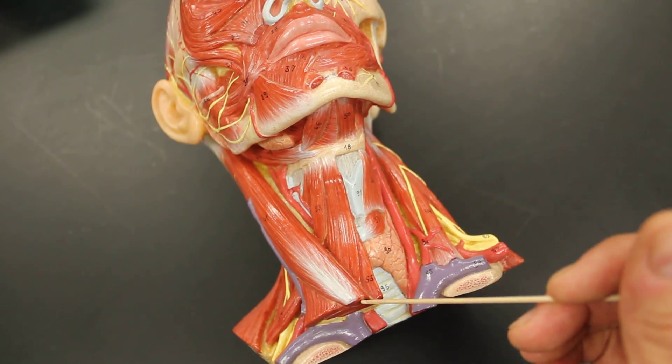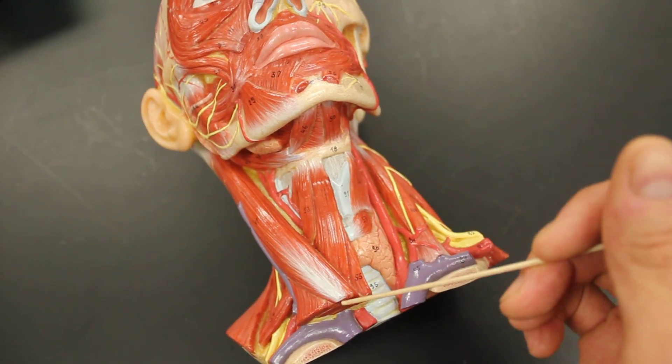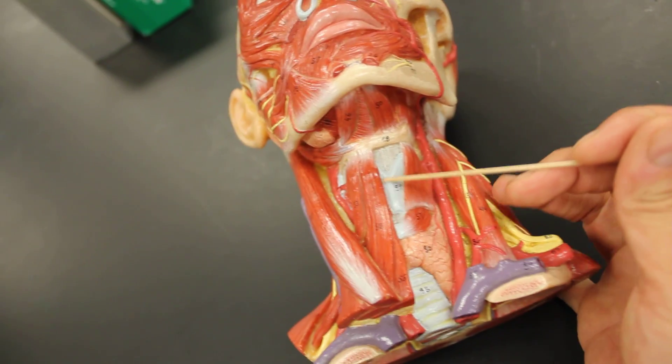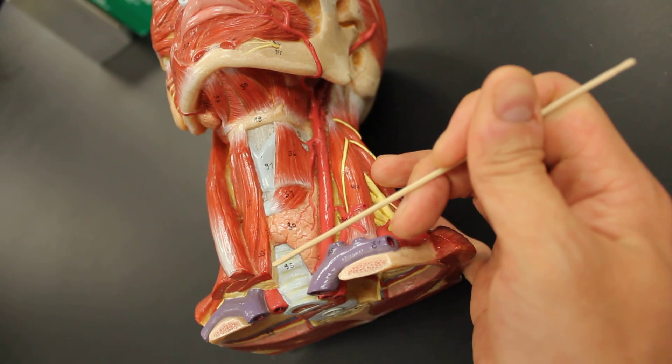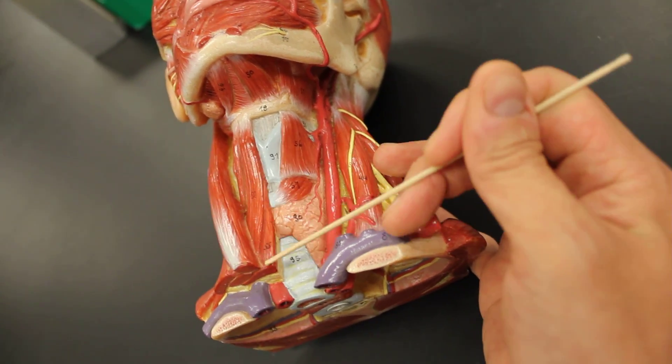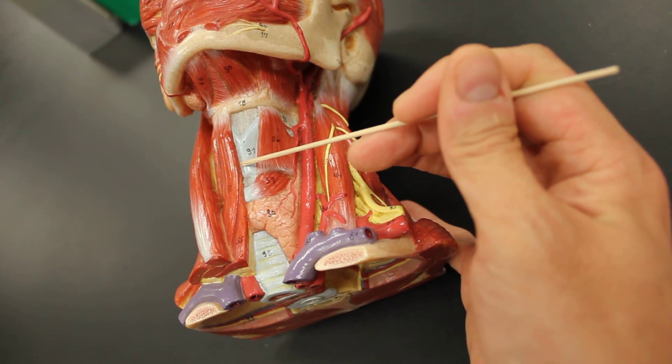Then we have sternohyoid, literally because it comes from the sternum to the hyoid bone. And then notice this, this is the thyroid cartilage, and we get this guy that comes from the sternum up to the thyroid cartilage. That would be called sternothyroid.